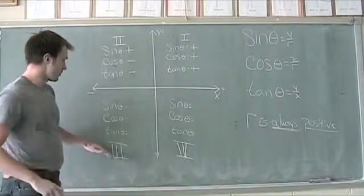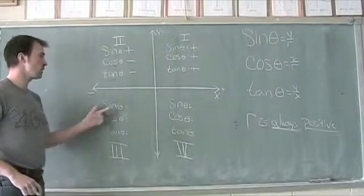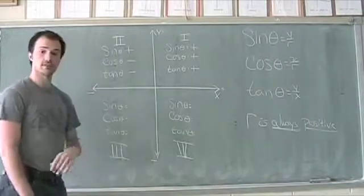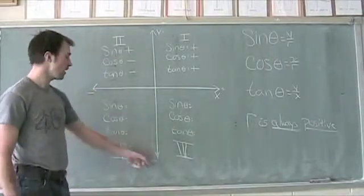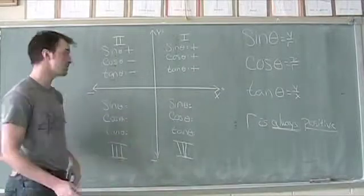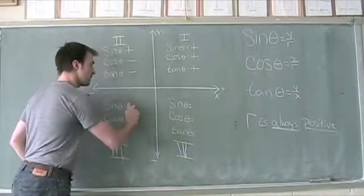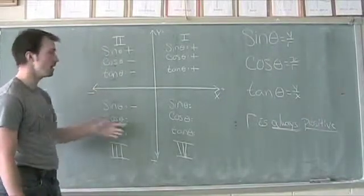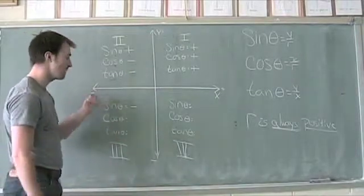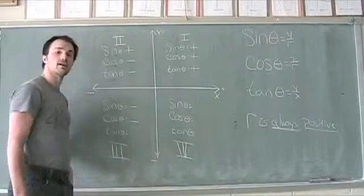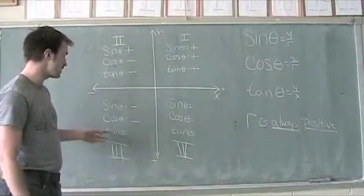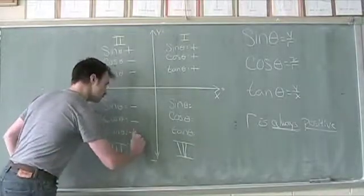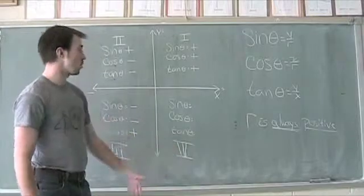Looking at quadrant 3: not only is the x value negative, but now the y value is also negative. For sine theta — y divided by r — a negative divided by a positive gives a negative value. Cosine of theta is x divided by r; x is negative, r is positive, so cosine is also negative here. But when we get to tangent of theta, we have a negative divided by a negative, which gives a positive value.